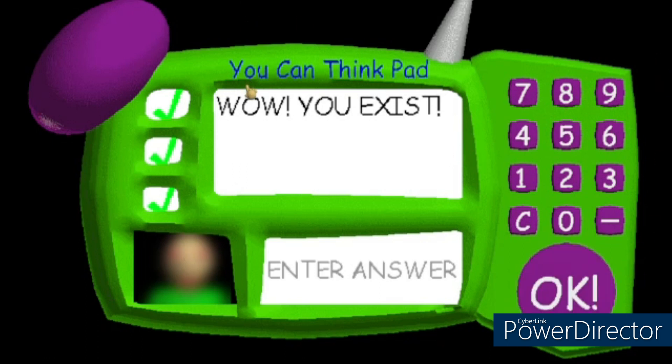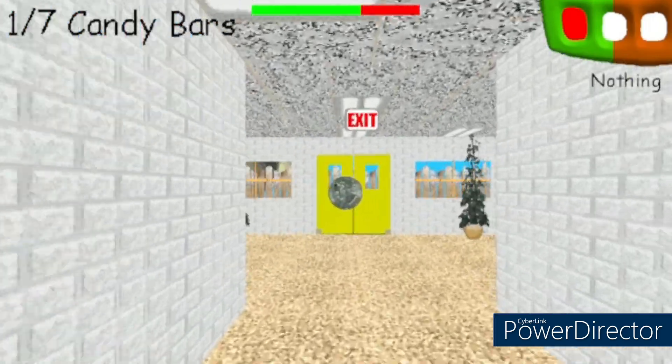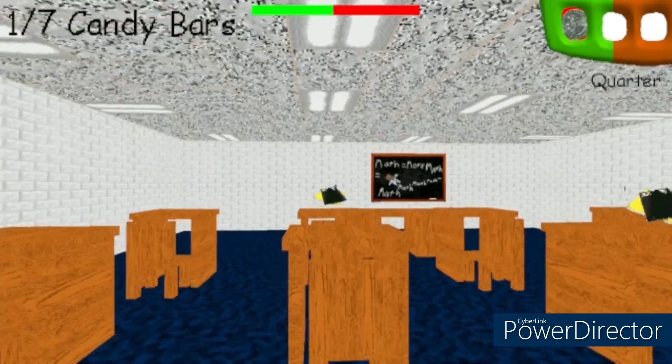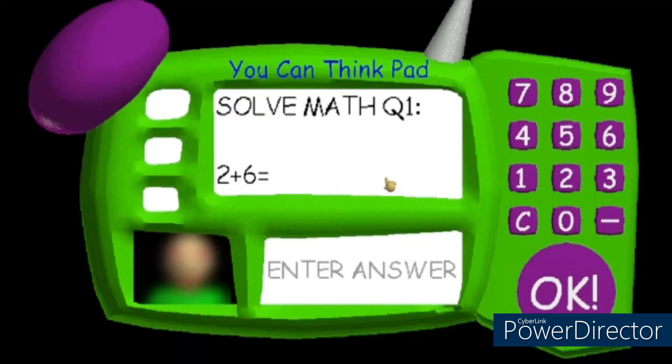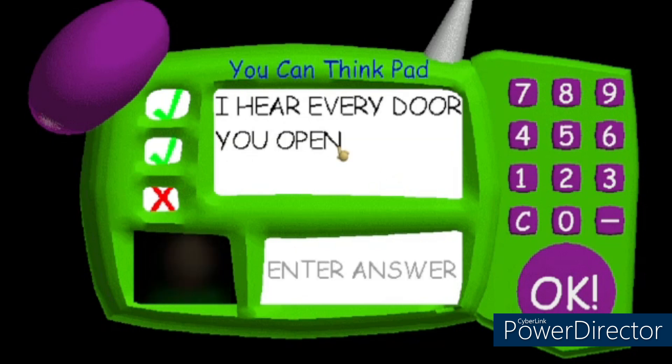All right, let's go. Let's get the quarter. And let's get the second candy bar. Two plus six is eight, this is six, and this is 98. I hear every door you open. There you go, there are Baldy's red eyes.